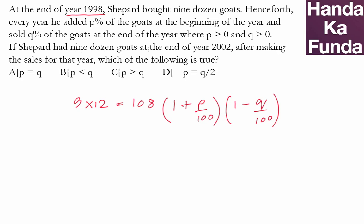If the shepherd had nine dozen goats at the end of the year 2002, after making the sales for that year, which of the following is true? So basically he kept on doing the same process of P percent growth and then a fall of Q percent.